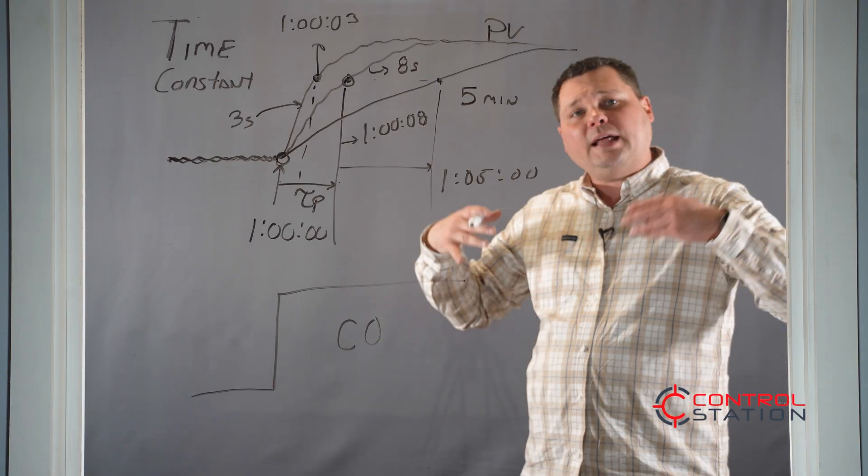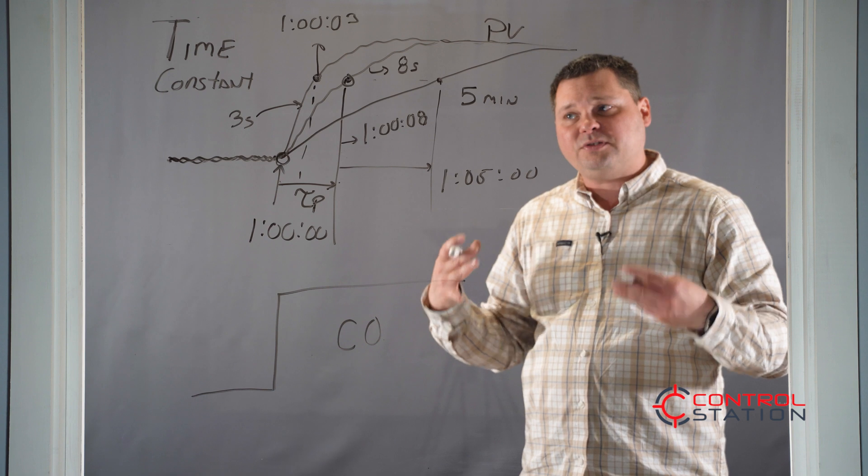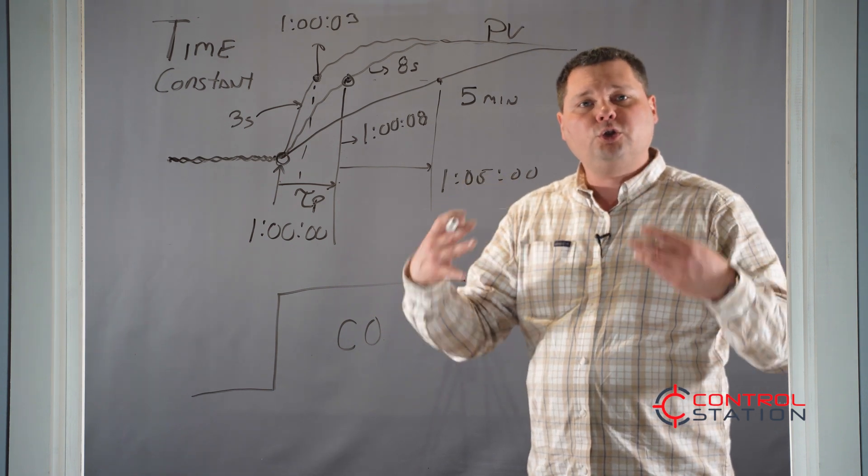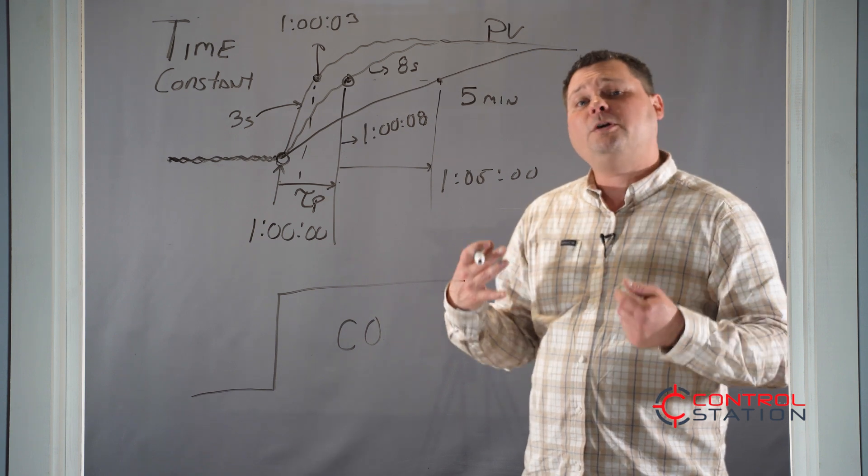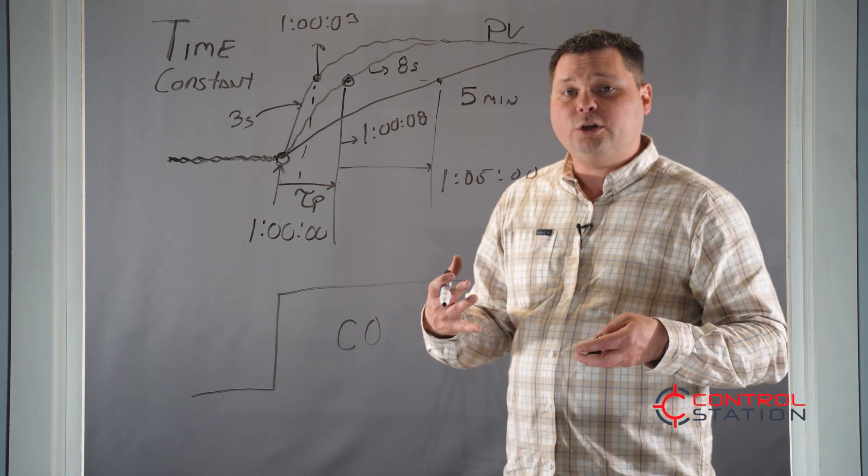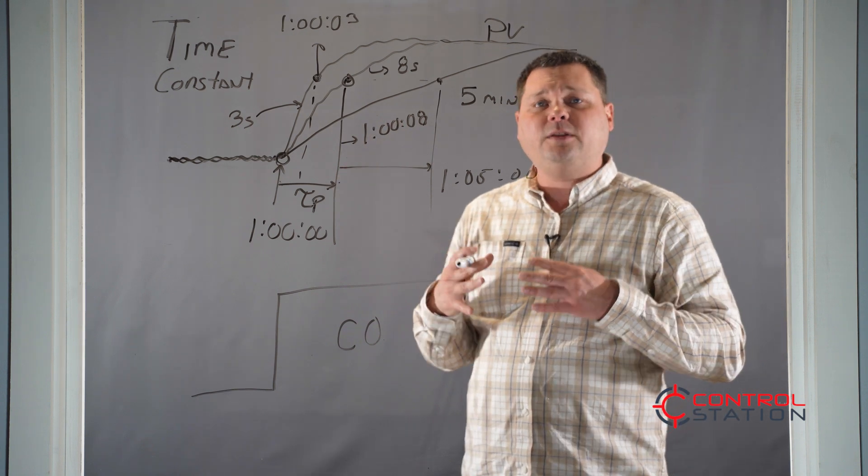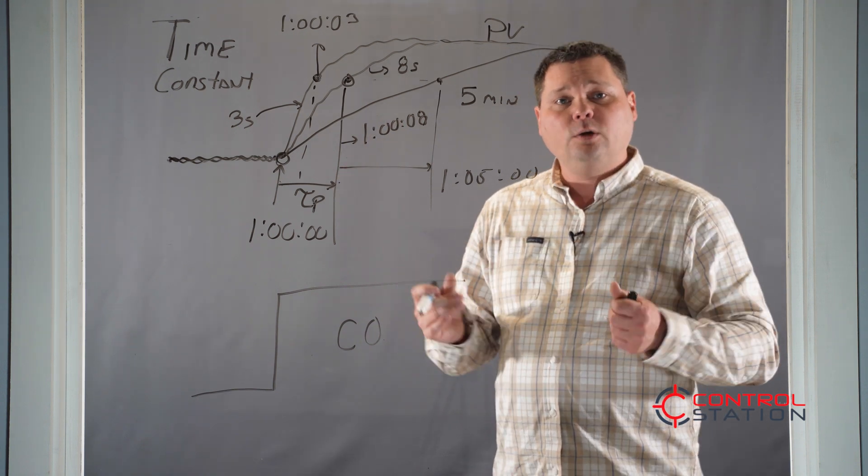So the time constant is the how fast, it's the clock of the system. Understanding the speed really helps you understand how well you can control the process. As we start to get into PI and PID control, we're going to start using this information to help us dictate the control objective and how fast we can tune it.